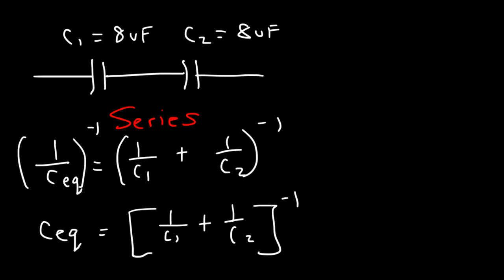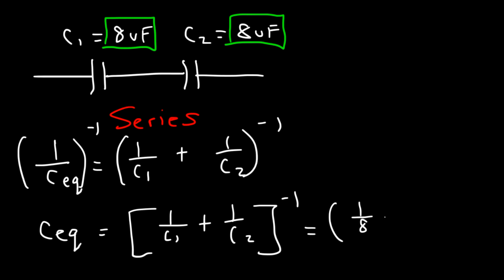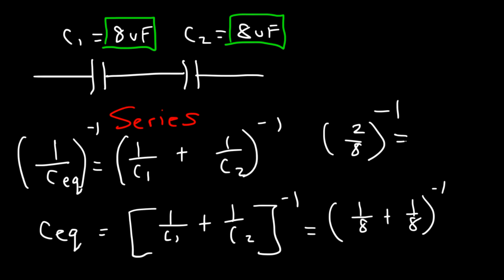It turns out that if you have two capacitors in series and they have the same value, the equivalent capacitance is going to be half of that value. In this case, they both have a value of 8 microfarads, so the equivalent capacitance is 4. If you type it in your calculator: (1/8 + 1/8)^(−1) — 1/8 plus 1/8 is 2/8, and 2/8 to the minus 1 is 8/2, which is 4. As you add capacitors in parallel, the equivalent capacitance goes up, but in series it goes down.